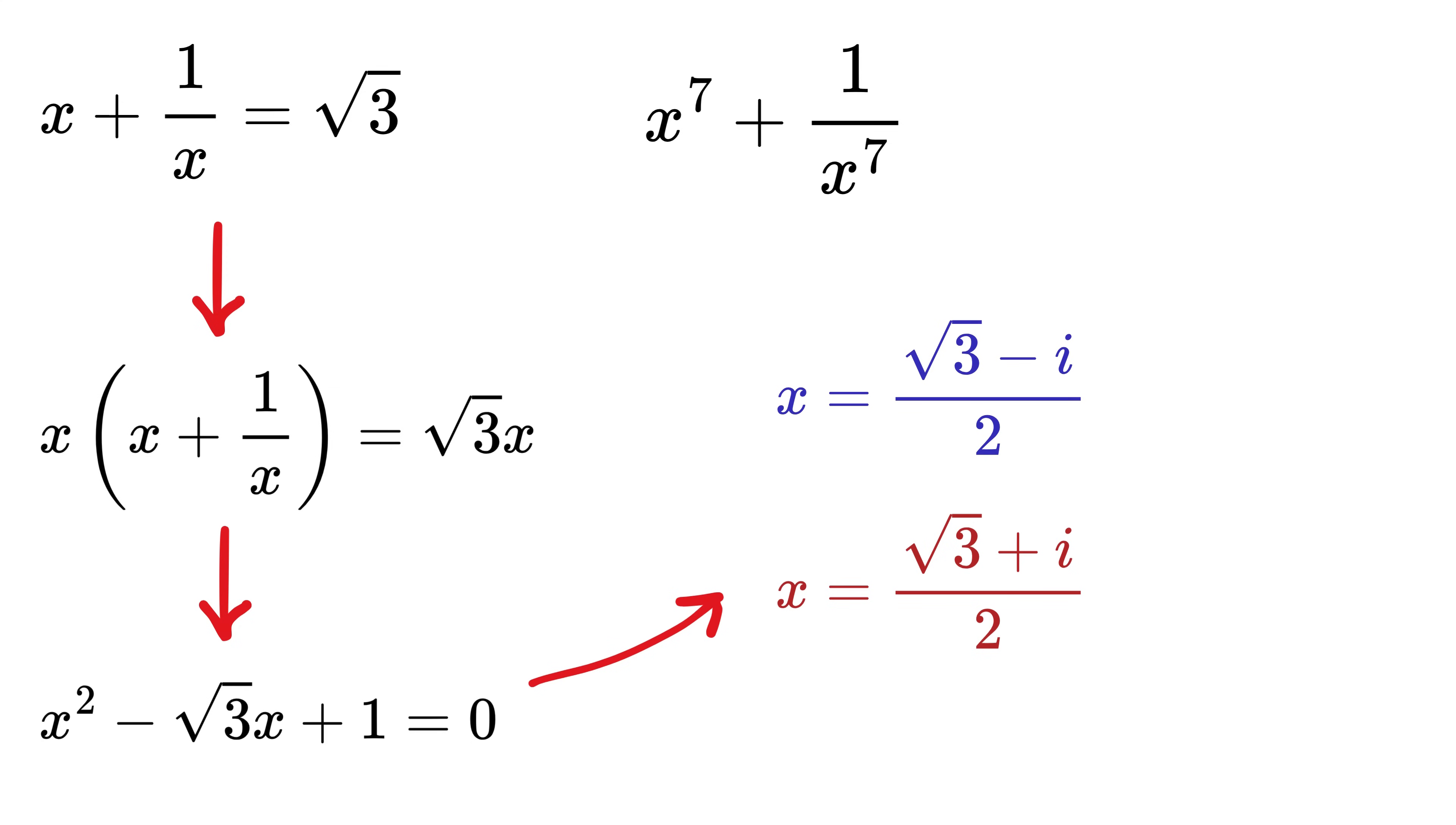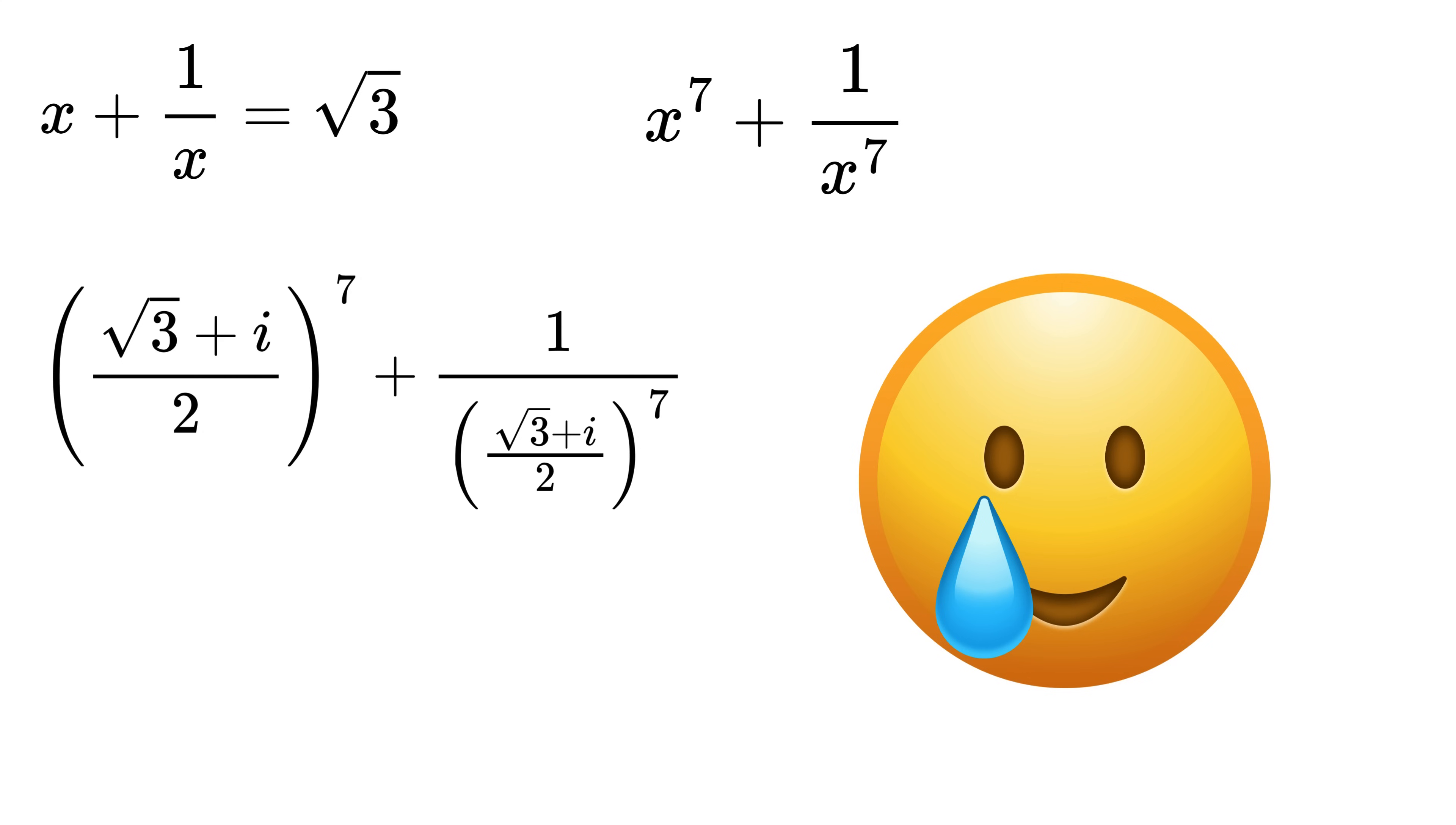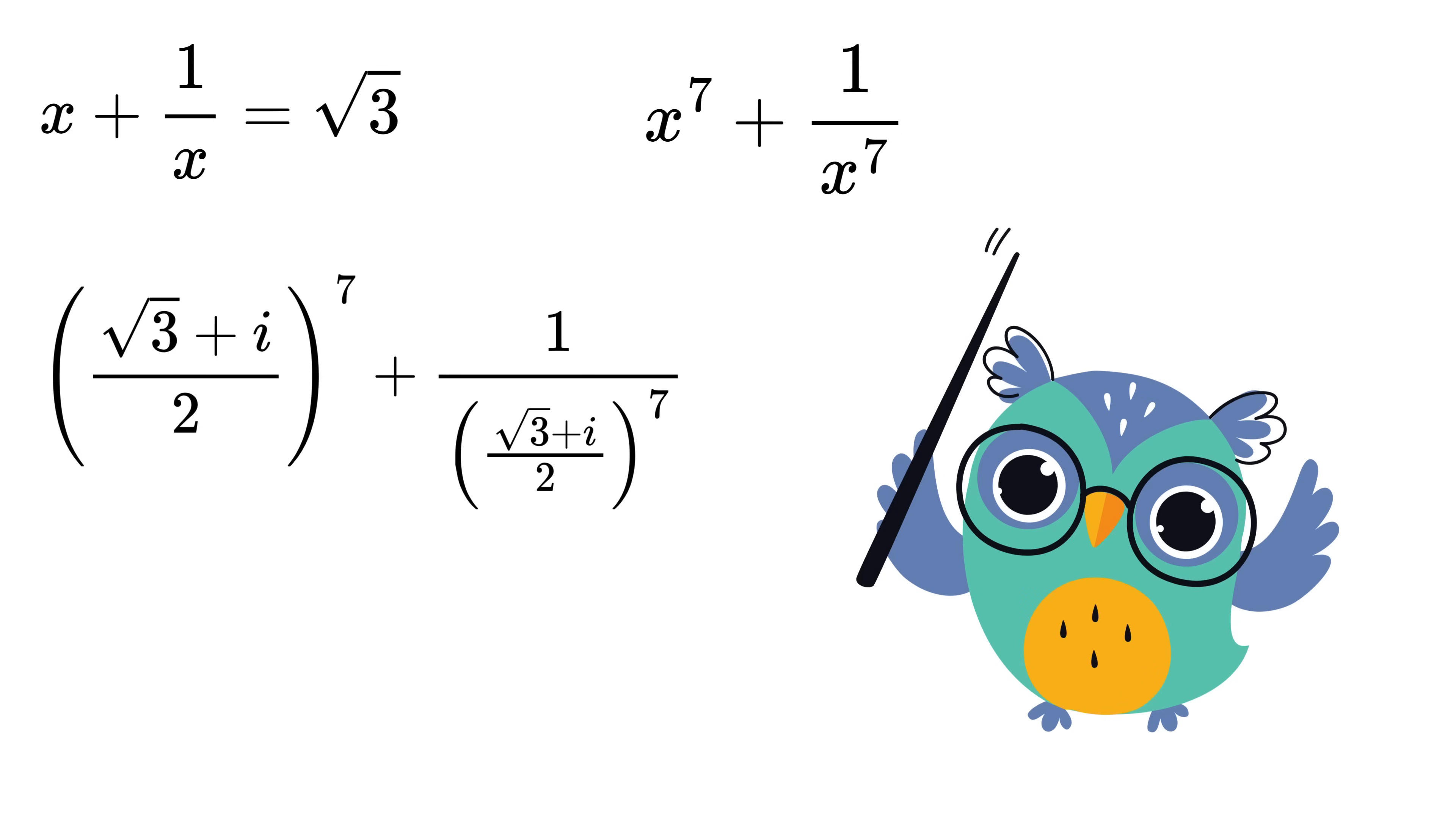It turns out the value of x is complex. Now you might think let's take this complex value of x, raise it to the power 7, then take its reciprocal also to the power 7 and add them up. Good luck expanding all that - that would be a nightmare. So we are definitely not going to do it that way.